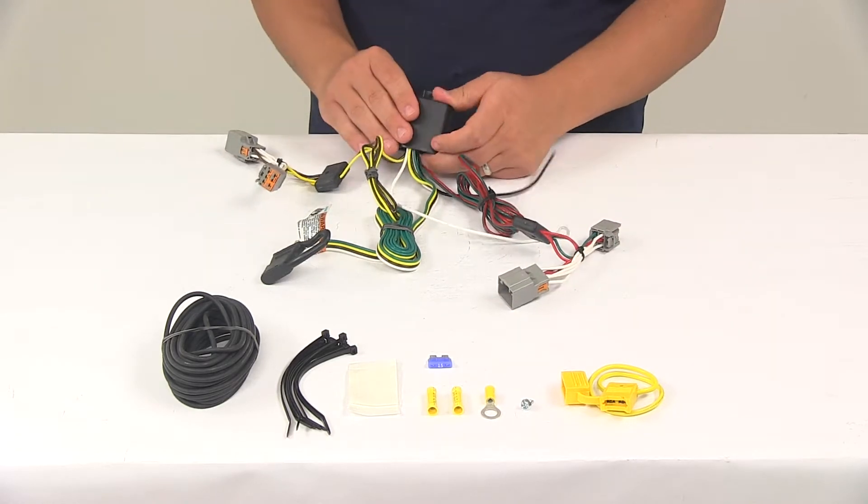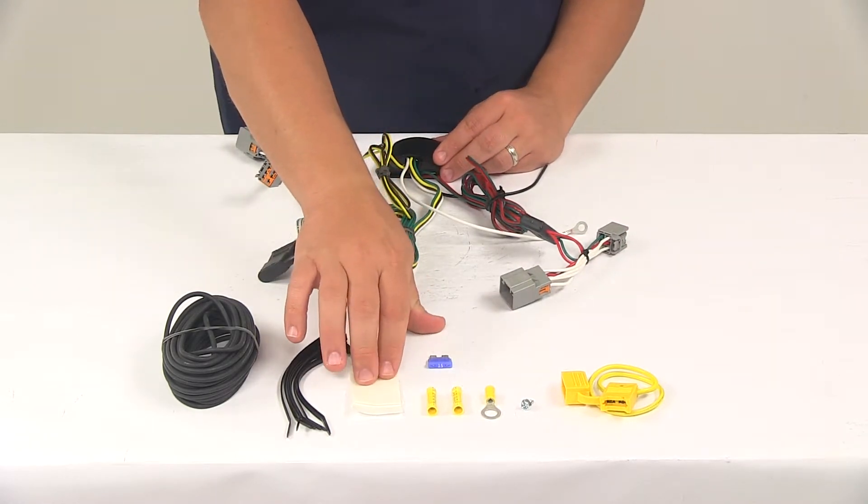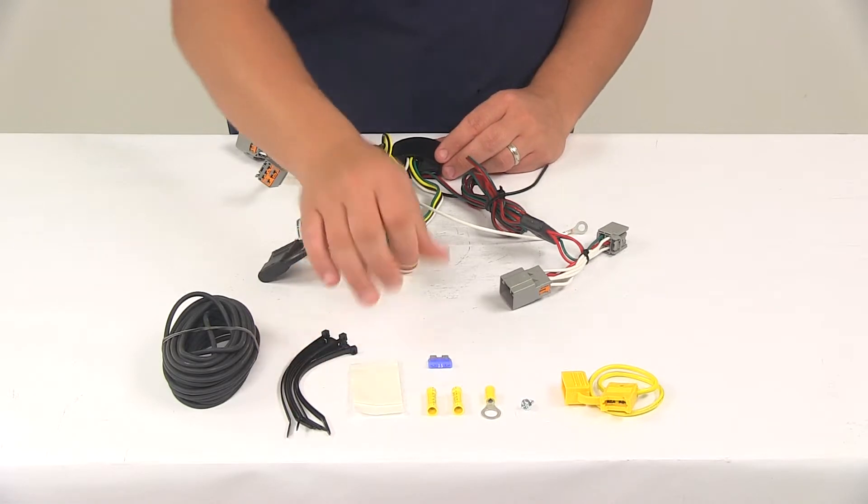Then you'll need to mount your converter box, and you can do that with the double-sided adhesive foam tape that's provided with the kit.